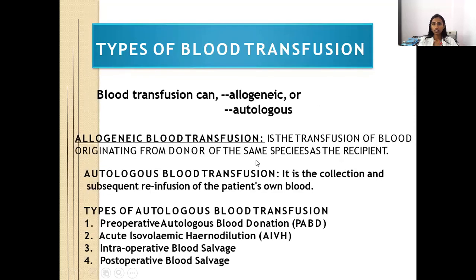There are two types of blood transfusion: allogenic and autologous. Allogenic blood transfusion is the transfusion of blood originating from a donor of the same species as the recipient. Autologous blood transfusion is the collection and subsequent infusion of the patient's own blood. The types of autologous blood transfusion include preoperative autologous blood donation, acute isovolemic hemodilution, intraoperative blood salvage, and postoperative blood salvage.